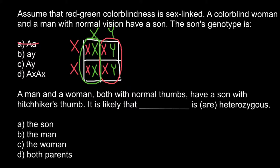Now we choose between answers B and C. Although a recessive X-linked disorder behaves phenotypically like a dominant condition in males, males are hemozygous — this is not a dominant genetic disorder. Answer C shows a dominant allele with Y chromosome, so we cross that out. The correct answer is B: a recessive allele paired with the Y chromosome, reflecting this X-linked recessive disorder.